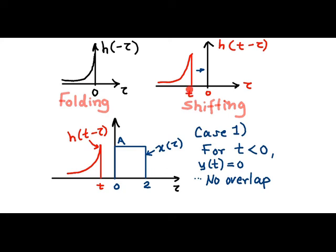In order to ensure whether we have appropriately selected this variable, we can substitute t as 0 and check if it results into a folded impulse response function, that is h(-τ).